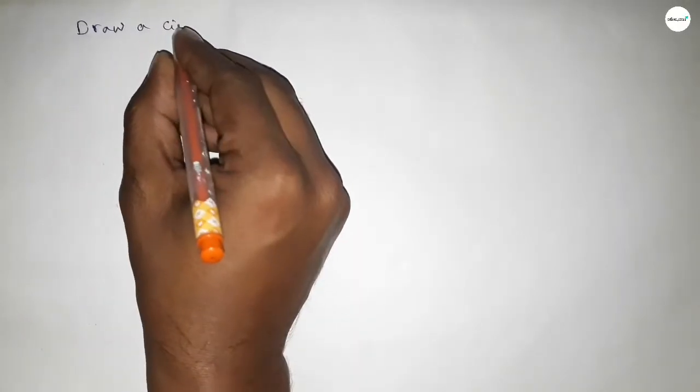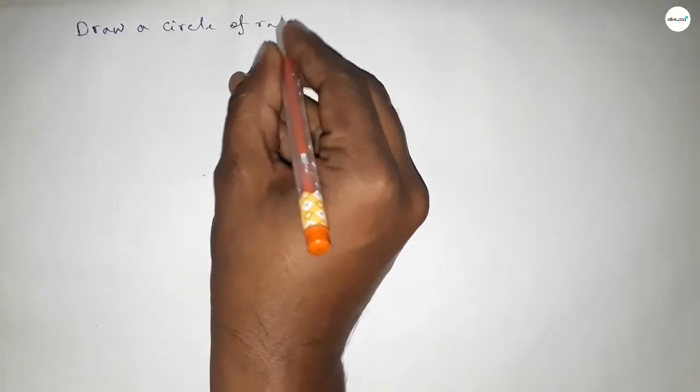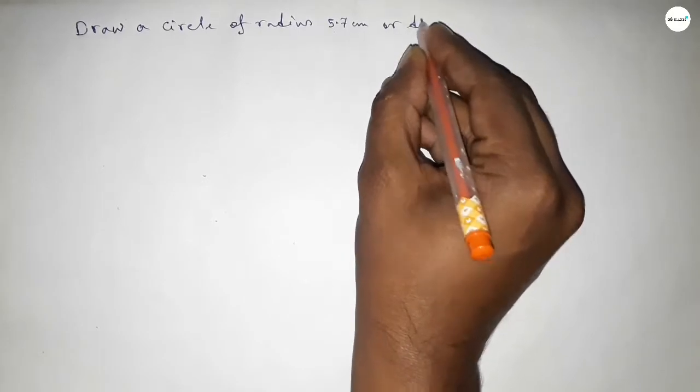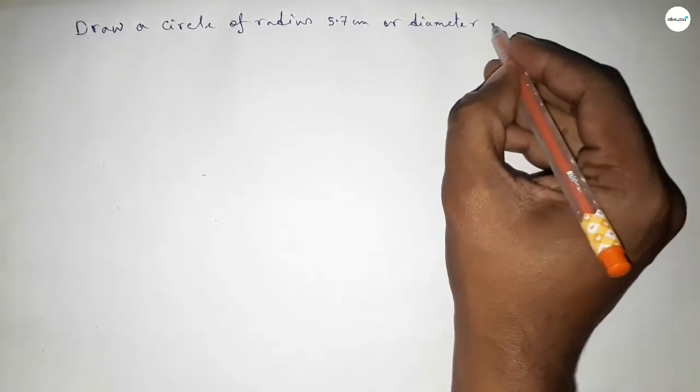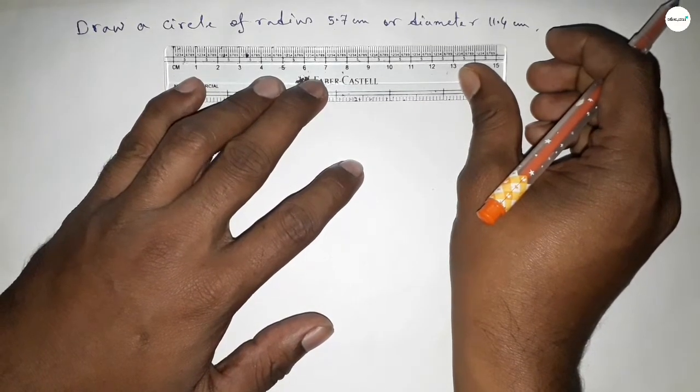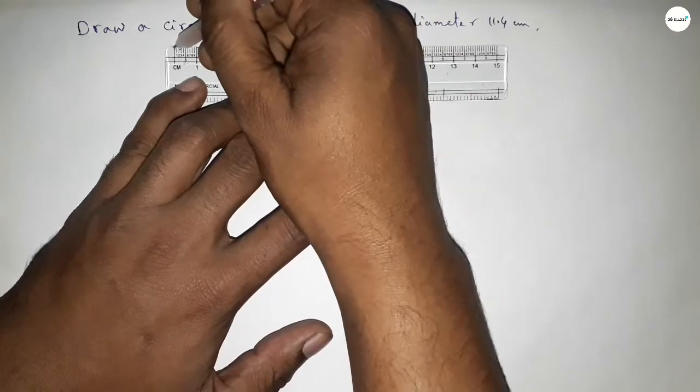Hi everyone, welcome to SSR Classes. Today in this video we have to draw a circle of radius 5.7 centimeters or diameter 11.4 centimeters. So let's start the video. First of all, we have to draw here the radius 5 point 7 centimeter.